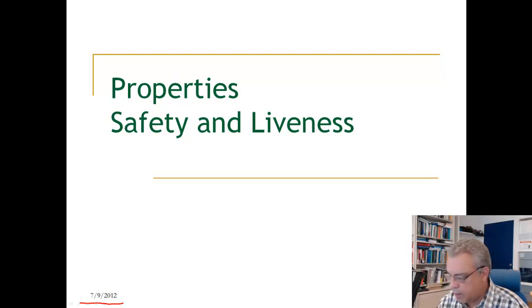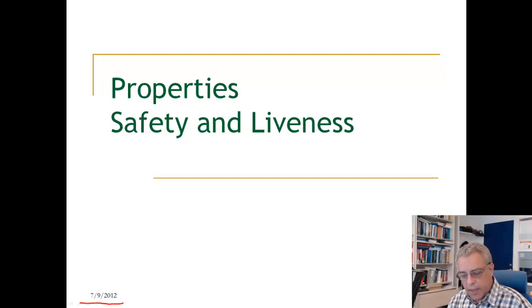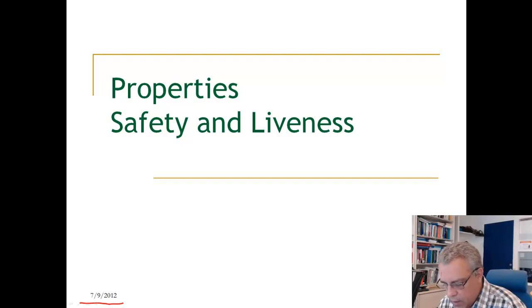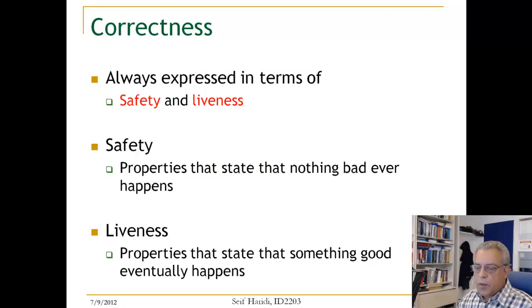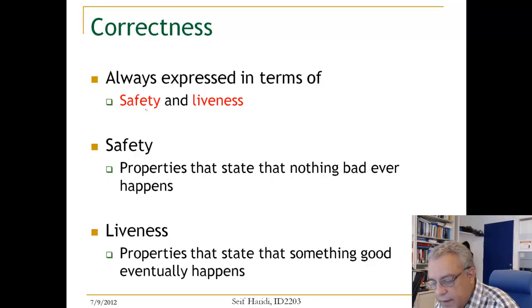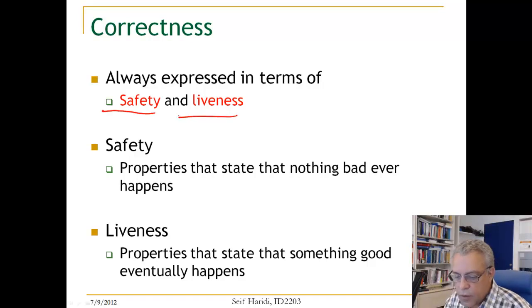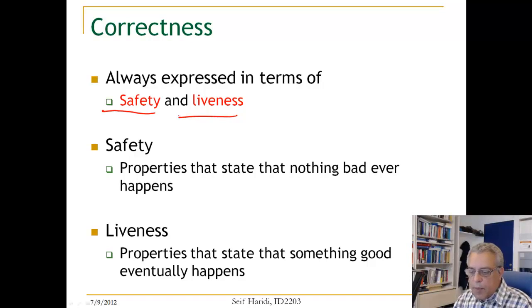Now we are going to talk about safety and liveness properties. These are the properties that services should have — it is part of the specification of components. Correctness will always be expressed in terms of safety and liveness properties. A safety property states that nothing bad should happen.